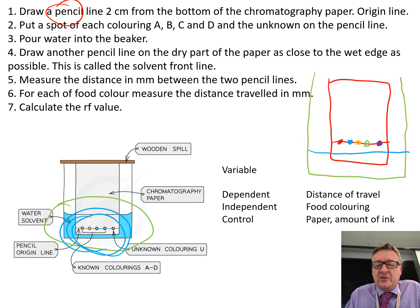Once it's actually worked, draw another pencil line at the top part of the paper as close to the wet edge as you can. If that's the wet edge there, you get your pencil and draw a straight line across using a ruler. That is the solvent front line.